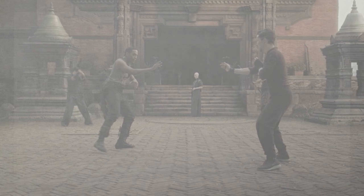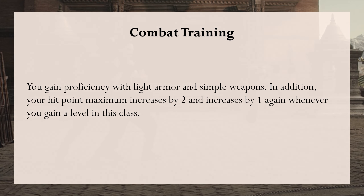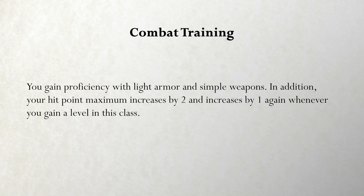Starting with Combat Training. You gain proficiency with light armor and simple weapons. In addition, your hit point maximum increases by two and increases by one again whenever you gain a level in this class. I basically stole this from Bladesingers, but also kind of draconic sorcerers. Proficiency with light armor is just a way to avoid having to cast Mage Armor as much, and thematically it makes sense. Simple weapons kind of doesn't matter much, but what it might accomplish is making a few more magic weapons accessible to you because the bank of weapons you're proficient with is a little bigger. The hit point maximum thing — going from functionally a d6 hit die to a d8 hit die isn't going to radically alter how much combat you can participate in. That's mostly there for flavor: you are just a little tougher, slightly more martial than most wizards.